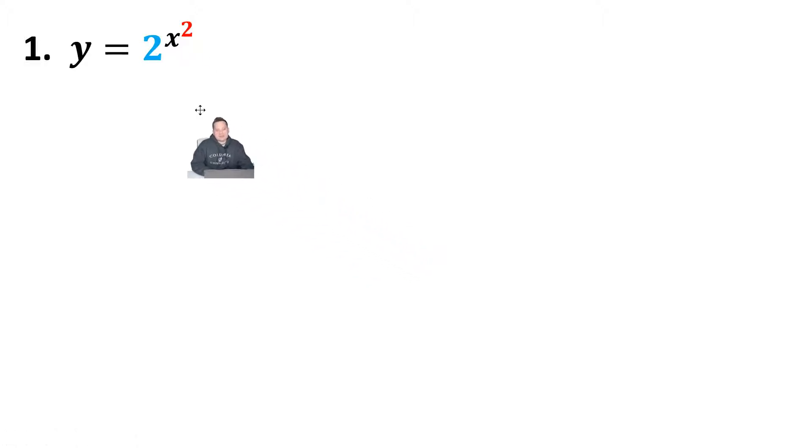So the key is first to rewrite this using the e and ln functions as follows. It's equivalent to writing y equals e to the ln of 2 times x squared.